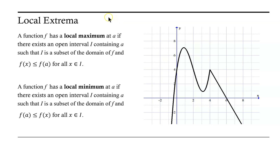Welcome. Let's take a look at the definition for local maximum and for local minimum. A function f has a local maximum at a if there exists an open interval I containing a such that I is a subset of the domain of f, and f(x) is less than or equal to f(a) for all x in the interval. So we're looking for an open interval around x value a such that the output at a is greater than or equal to the output values for all other x in that interval.